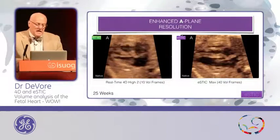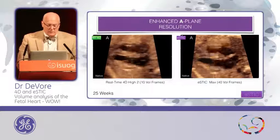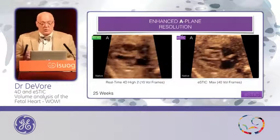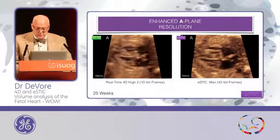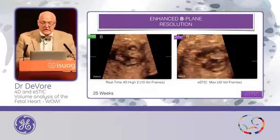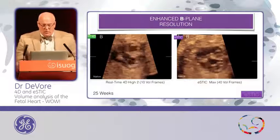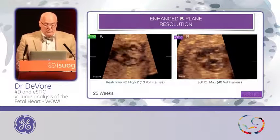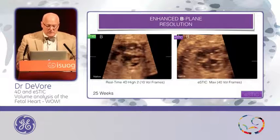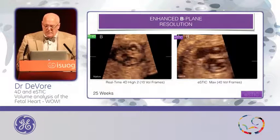If we compare the resolution in the A, B, and C planes — on the left, we have the real-time 4D from the same fetus at 25 weeks of gestation. It looks very nice, but the image on the right with the E-STIC has a little bit higher resolution. If we look at the B plane, which has been a disaster most of the time with traditional STIC — I always seem to get artifact unless I spend 35 minutes trying to get a perfect acquisition — with E-STIC and real-time 4D, that's virtually eliminated. Look at the details of the anatomy: we see the fish mouth of the mitral valve, the tricuspid valve, the pulmonary valve, very nicely demonstrated.